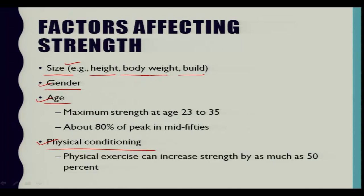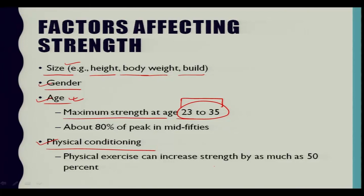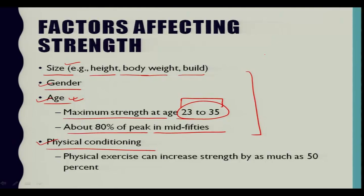Strength decreases slowly until the mid-40s, then decreases more rapidly thereafter. In the mid-50s, average strength is about 80 percent of peak, and in the mid-70s it is about 60 percent of peak. This data is taken from J. Roybuck and Kroemer's book Engineering Anthropometry Methods. Comparing male and female workers, male workers are stronger; the rule of thumb cited in ergonomic literature is that average female strength is 67 percent — about two-thirds — of the average male strength across various muscle groups.